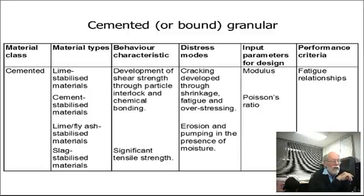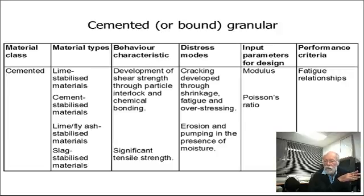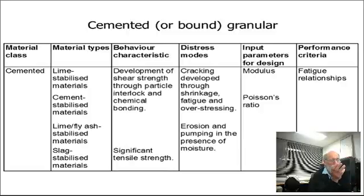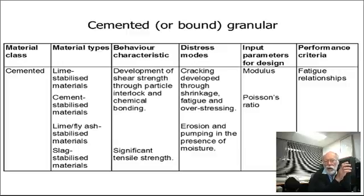When we come to cemented materials — where they get beyond a certain MPa value, which I'll discuss later — these can be achieved by lime, cement, other pozzolans, or bitumen. These develop their strength not only through particle interlock but through chemical bonding, which holds them together. So now we've got tensile strength.